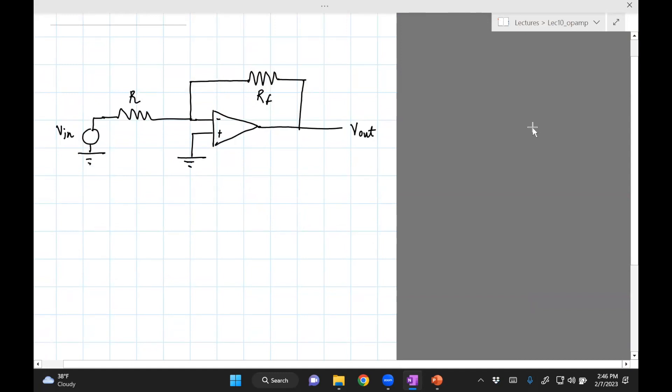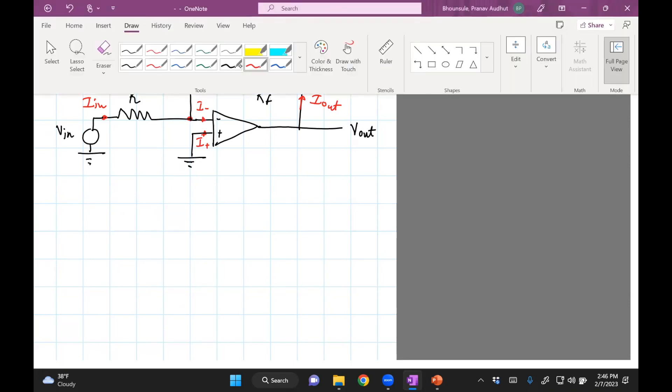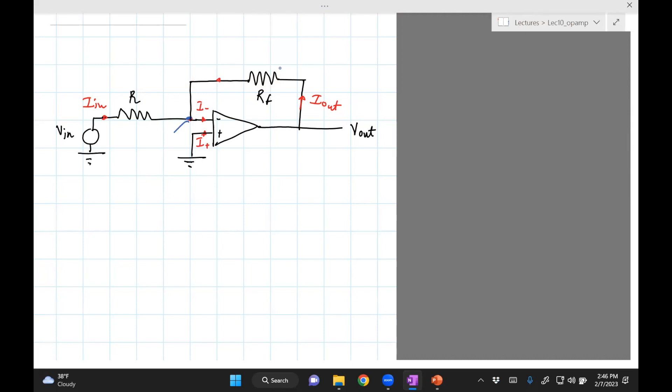So what we'll do is we will assume currents whichever way we want. Let's say that this is I_out, let's assume this is I_in, and remember we said this is I_negative, I_positive. I'm just going to write that down, and I think it'll be an advantage if I can figure out the voltage here. I'll call that point C and I'll be interested in computing the voltage at C.